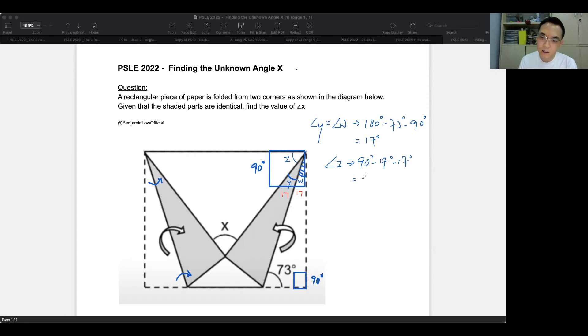This will give you 90 minus 34. So that should give you 56 degrees.